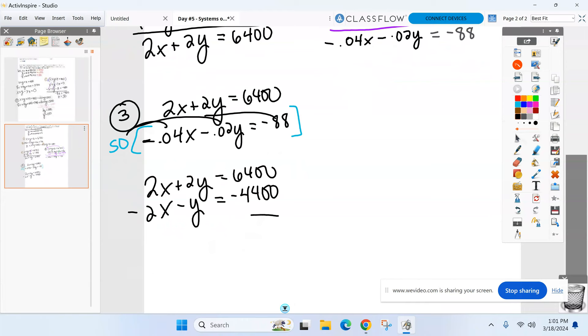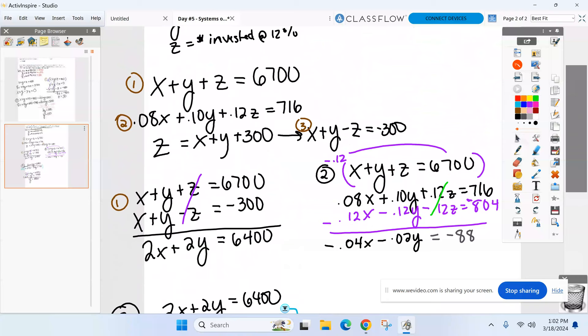All right. Good job. We're almost there. They cancel. And what are we left with? 2,000 here? 2,000 for Y. So it looks like we invested $2,000 in the 10% account.